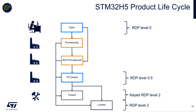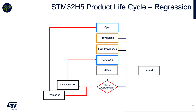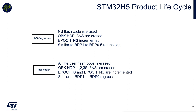This is the main difference from RDP levels previously used. Regarding regression, you can do it from provisioning, TrustZone-provision, or TrustZone-close. You can do a partial regression or a full regression. From the locked state, you can't do anything. On partial regression: the non-secure flash code is erased, OBKey HDP level 3 non-secure are erased, and an epoch counter increments — this is used to generate the specific key encrypting the secure storage, so after each non-secure regression, the encryption of non-secure OBKey storage changes.